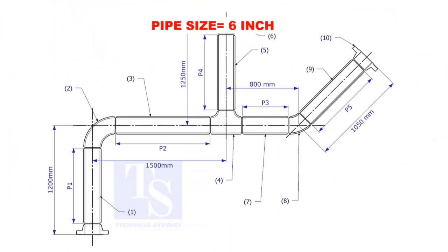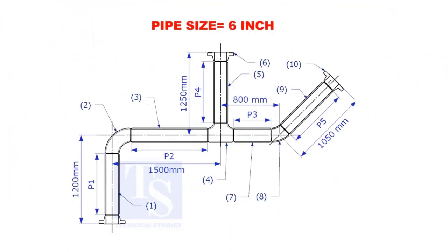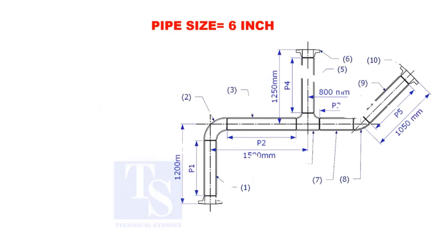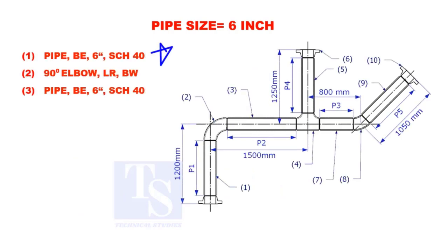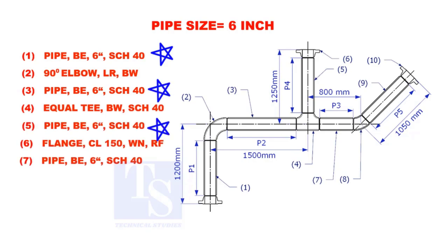Assume that the pipe size is 6 inches. Item numbers 1, 3, 5, 7, and 9 are pipes.